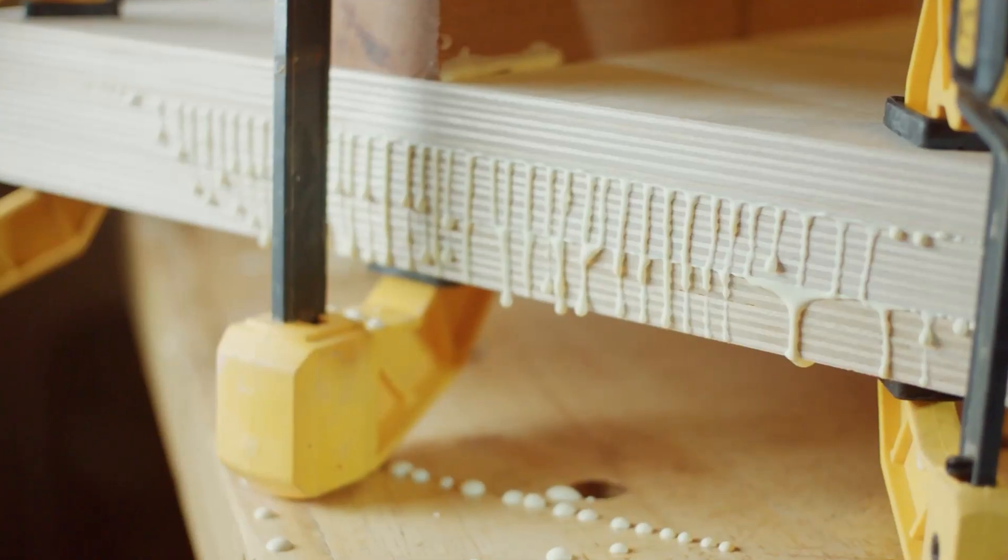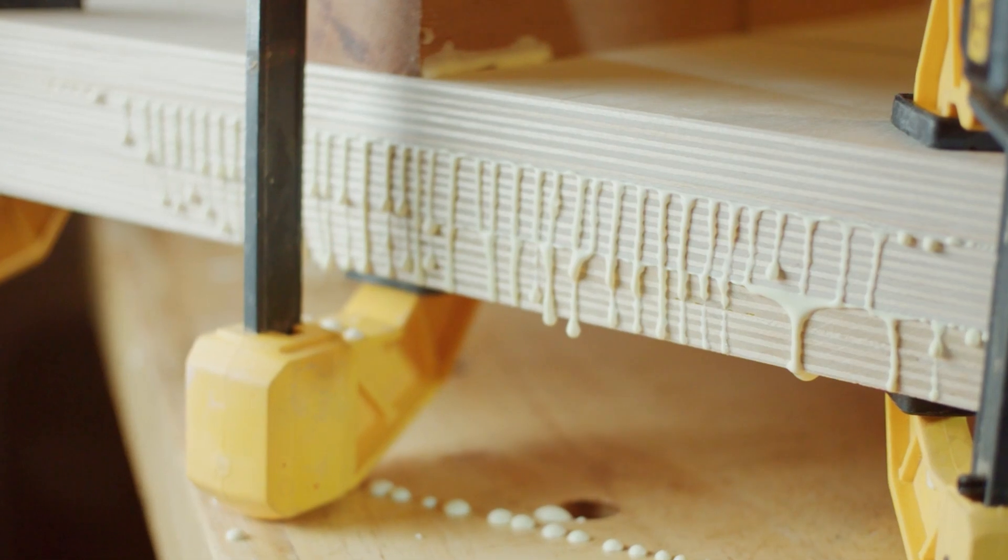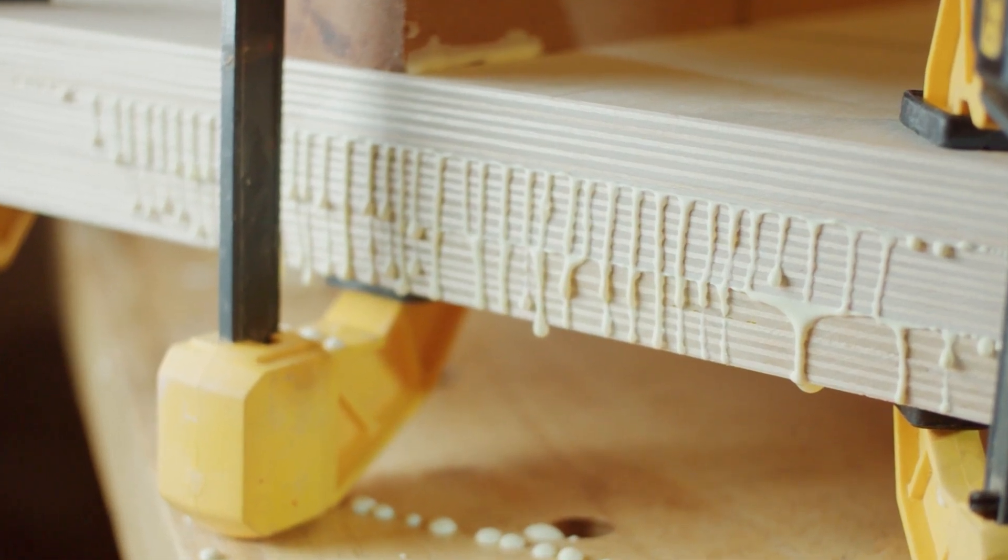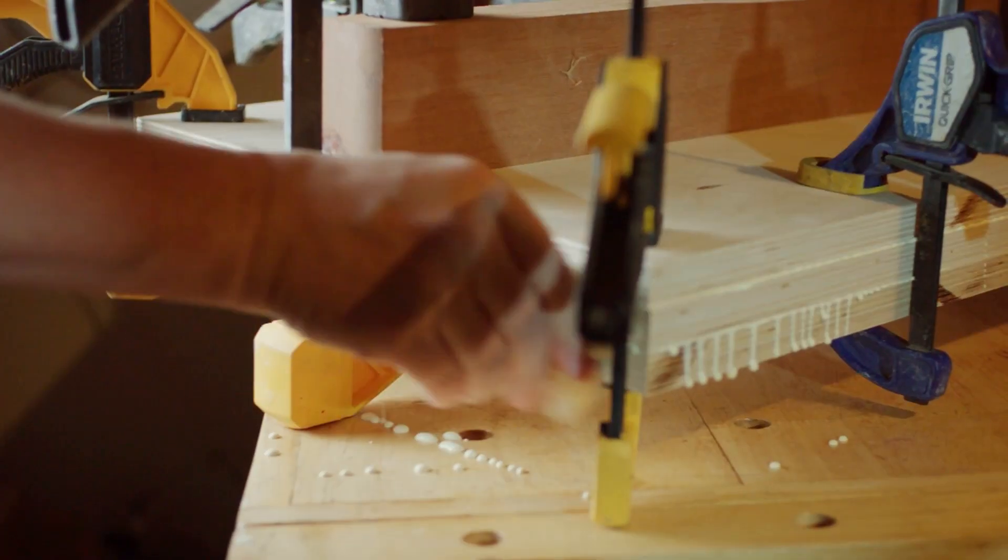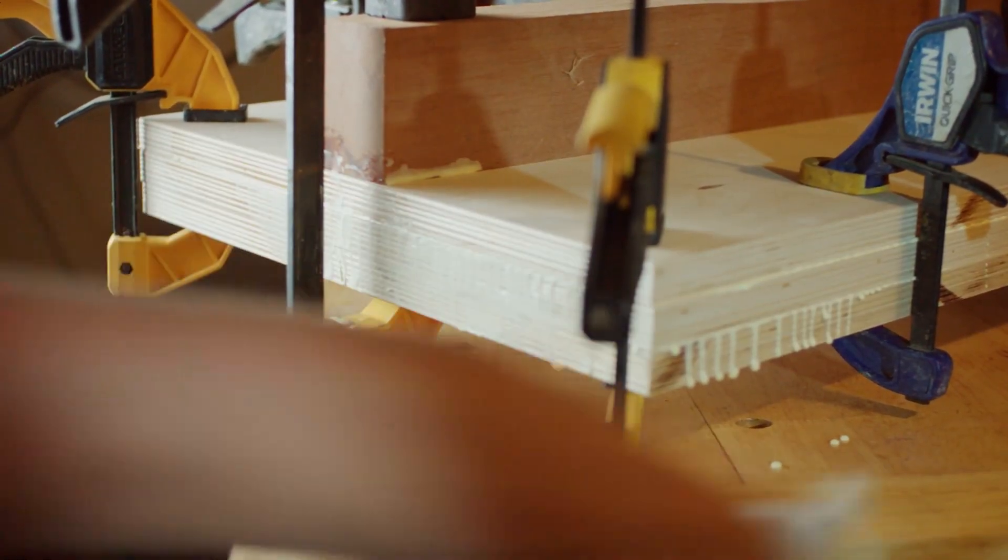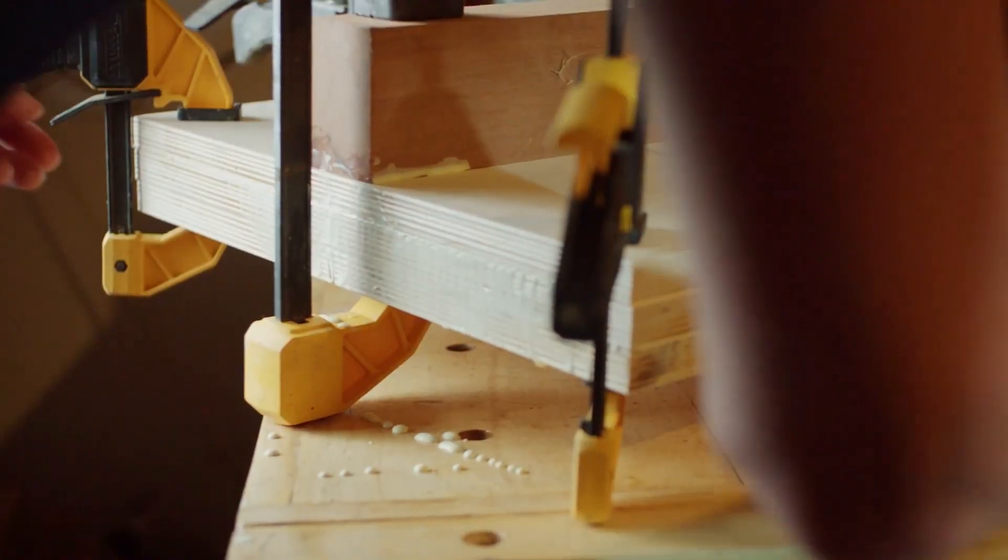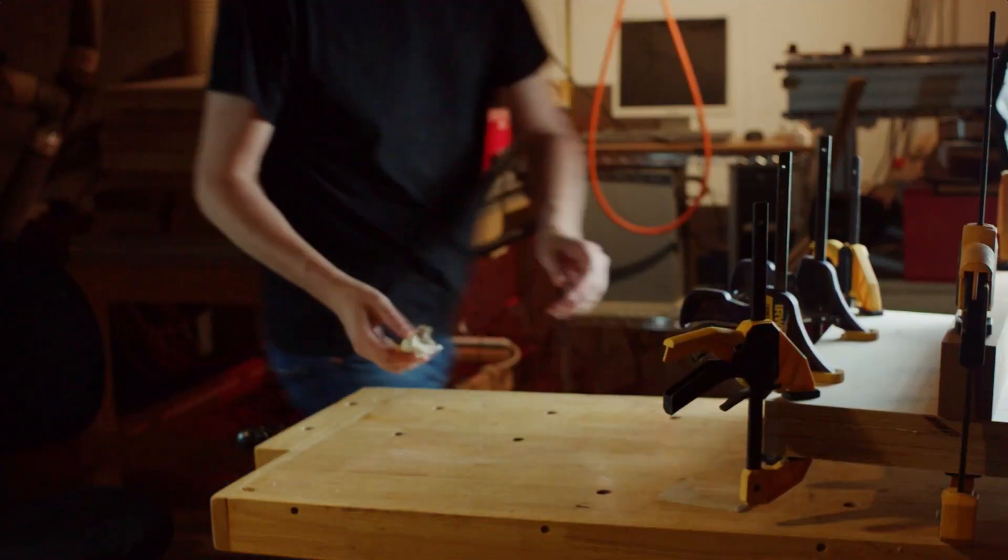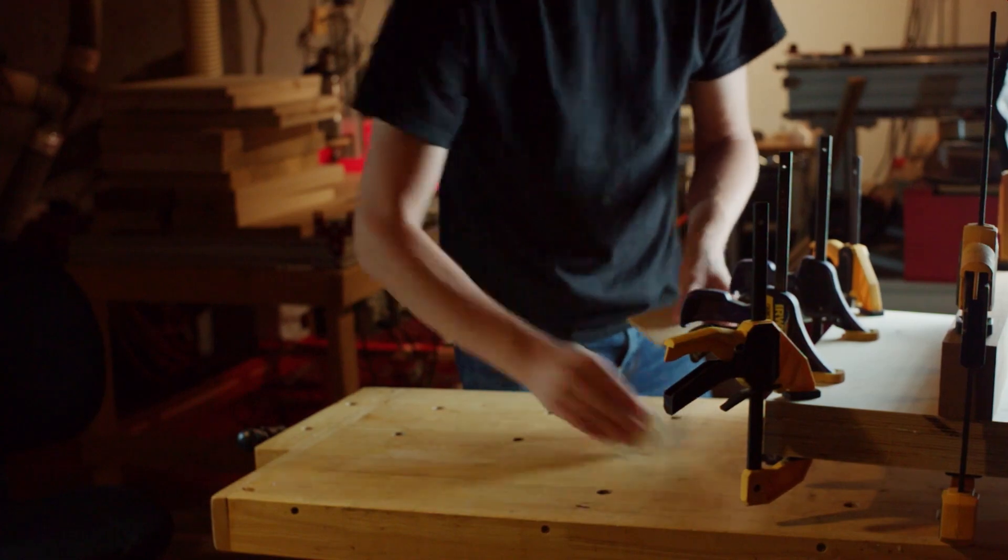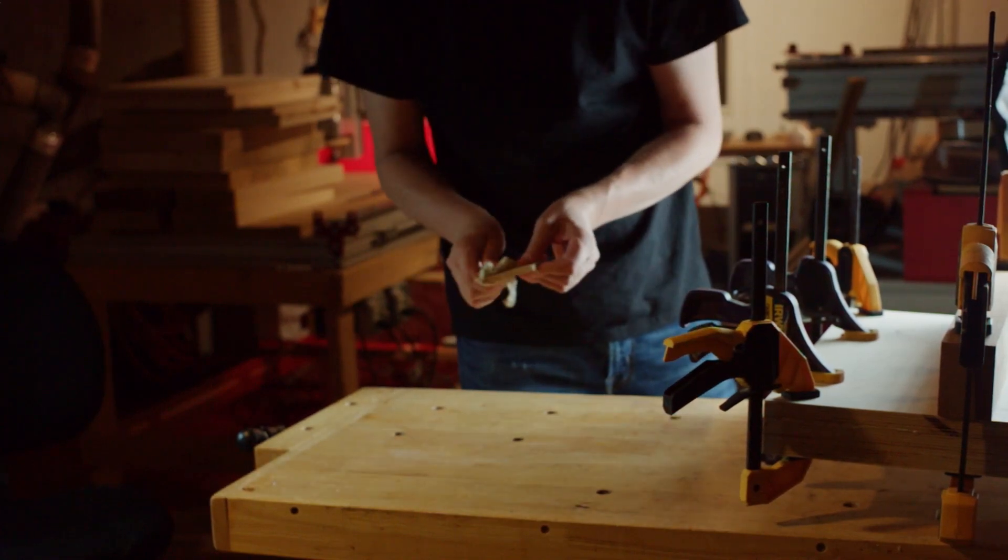Hide glue will harden to a much more brittle structure, imparting less dampening than PVA formulas. Hide glue also fails with excessive atmospheric heat and moisture, requiring more care and caution with the instruments constructed this way. As we will discuss later, glue penetration may or may not contribute to a weaker joint with hide glue, depending on how it's used and applied.